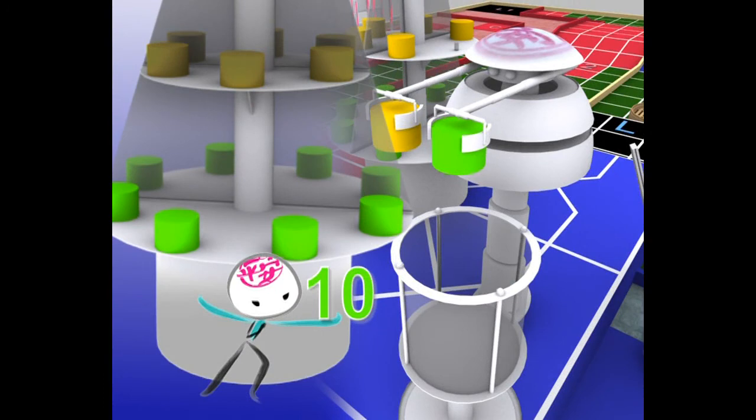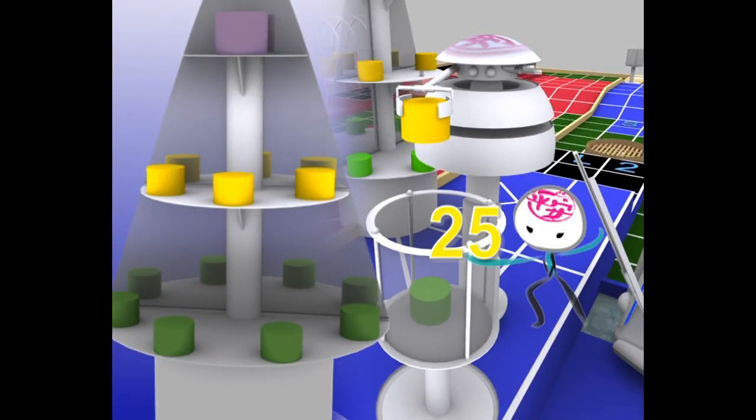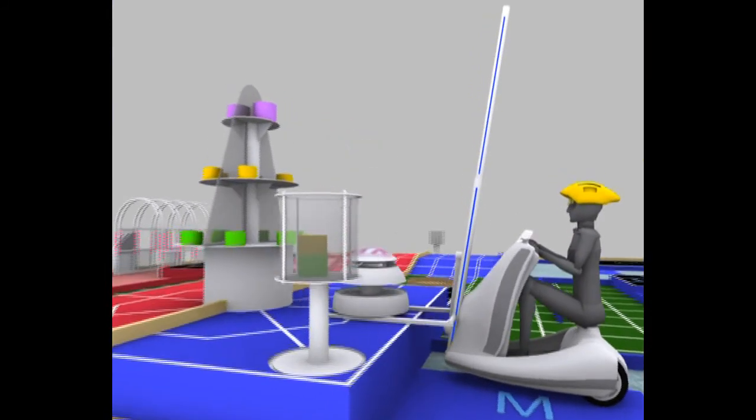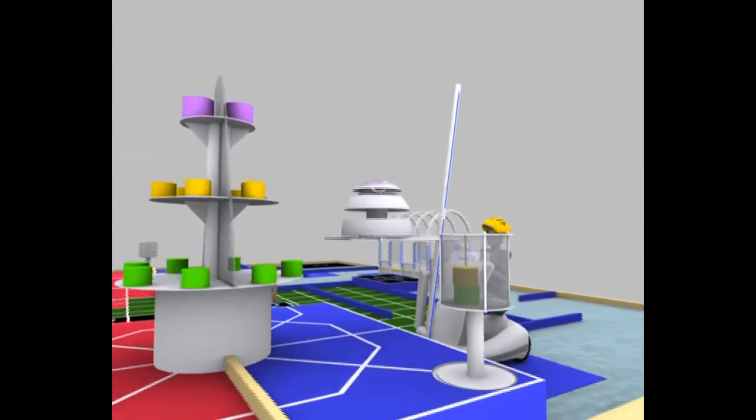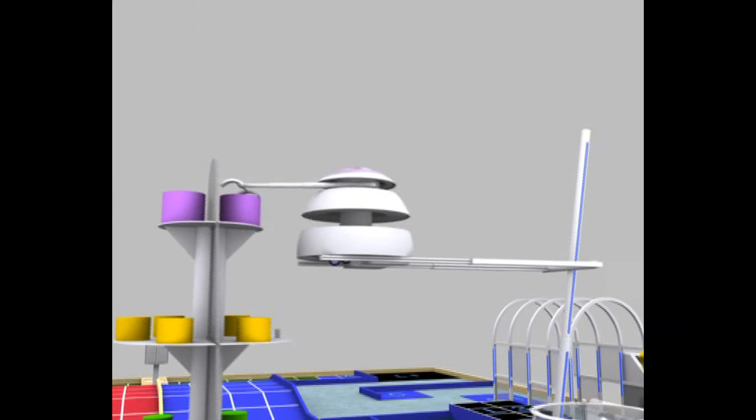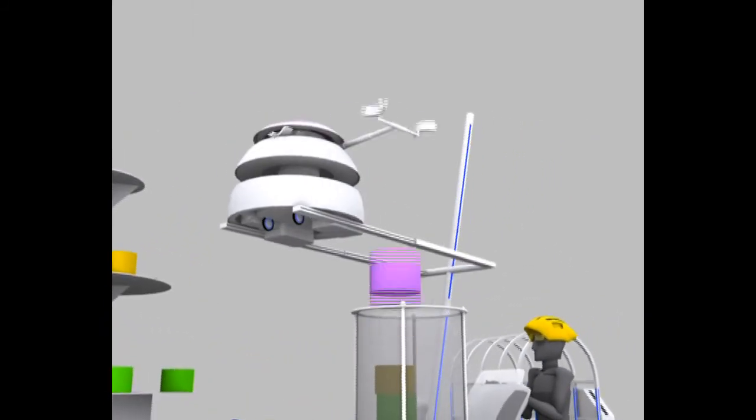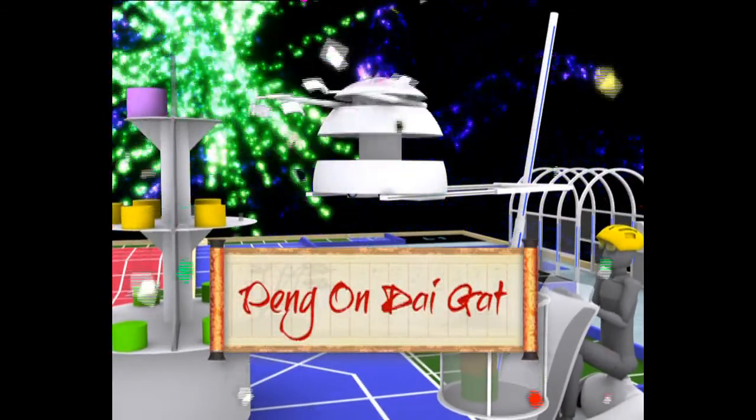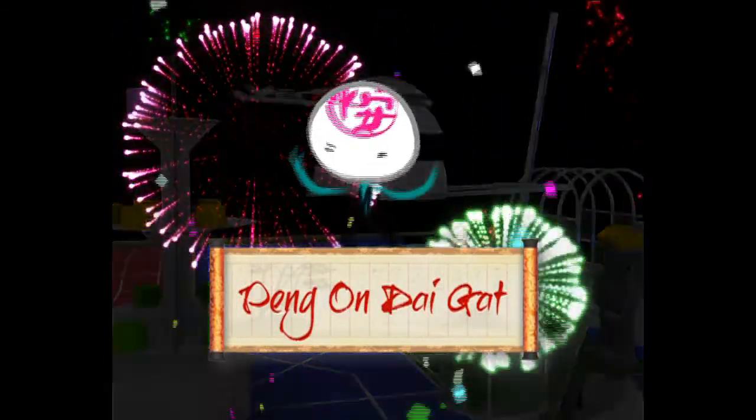You score 10 points for each bun of the lowest layer, 25 points for each bun of the middle layer. The manual robot lifts up the collector robot to collect bun in the top layer. After successfully putting the buns in the basket, the match would immediately end. This type of achievement would be called Peng On Daigat.